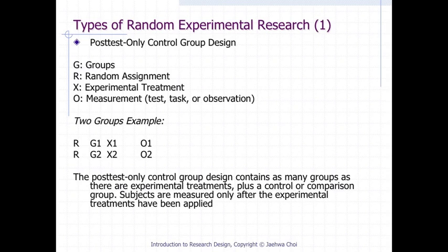Post-test only control group design is one of the popular types of random experimental design. It contains as many groups as there are experimental treatments, plus a control or comparison group, and subjects are measured only after the experimental treatments have been applied.